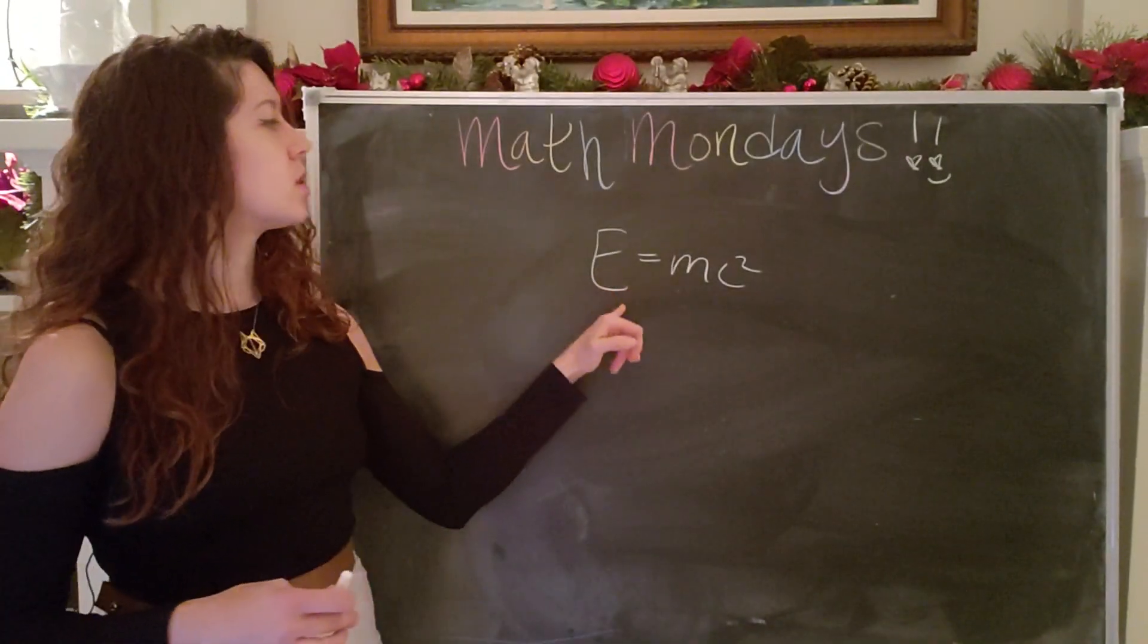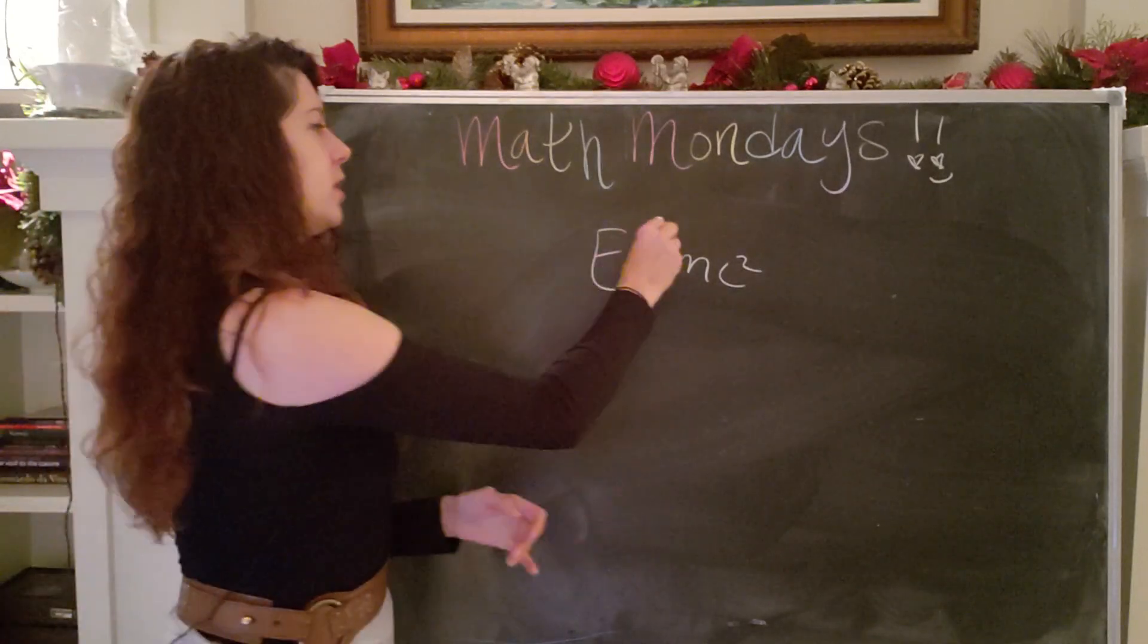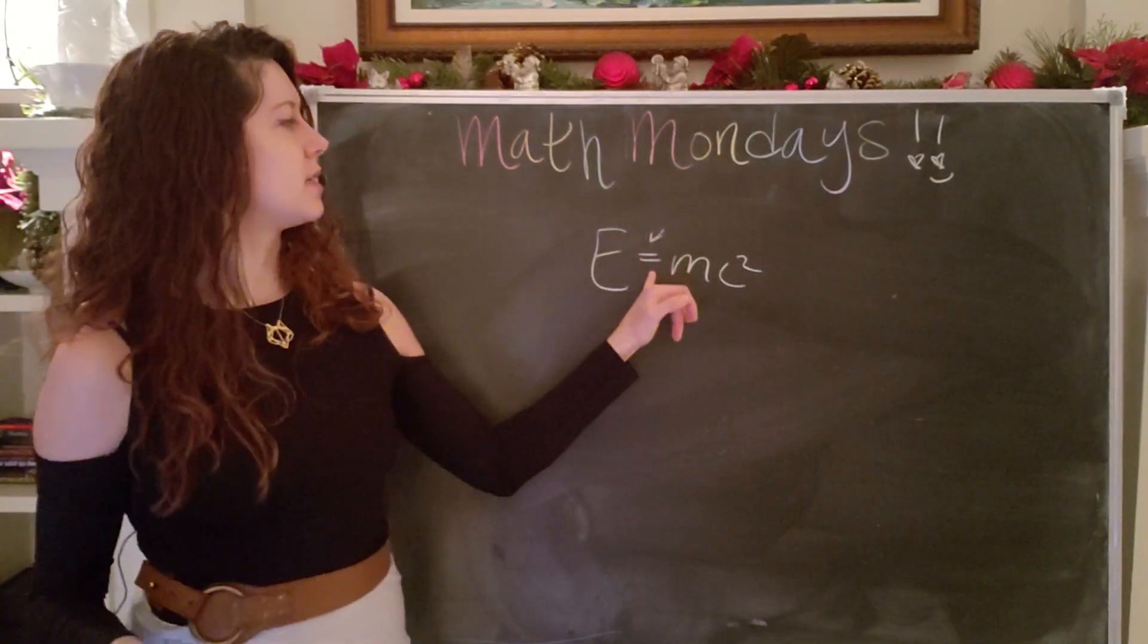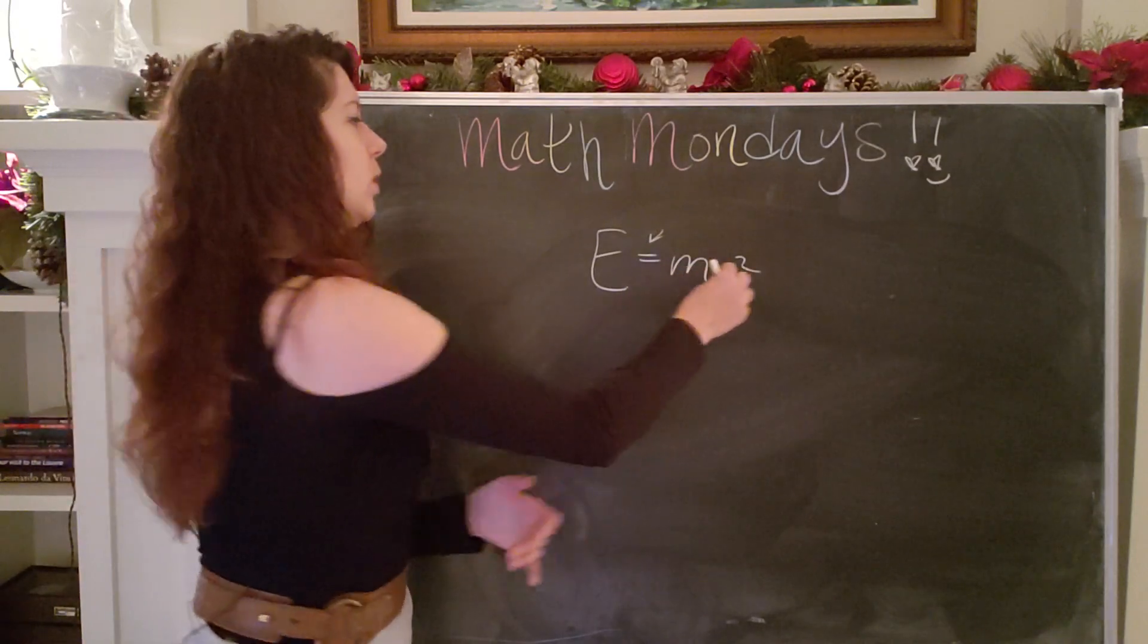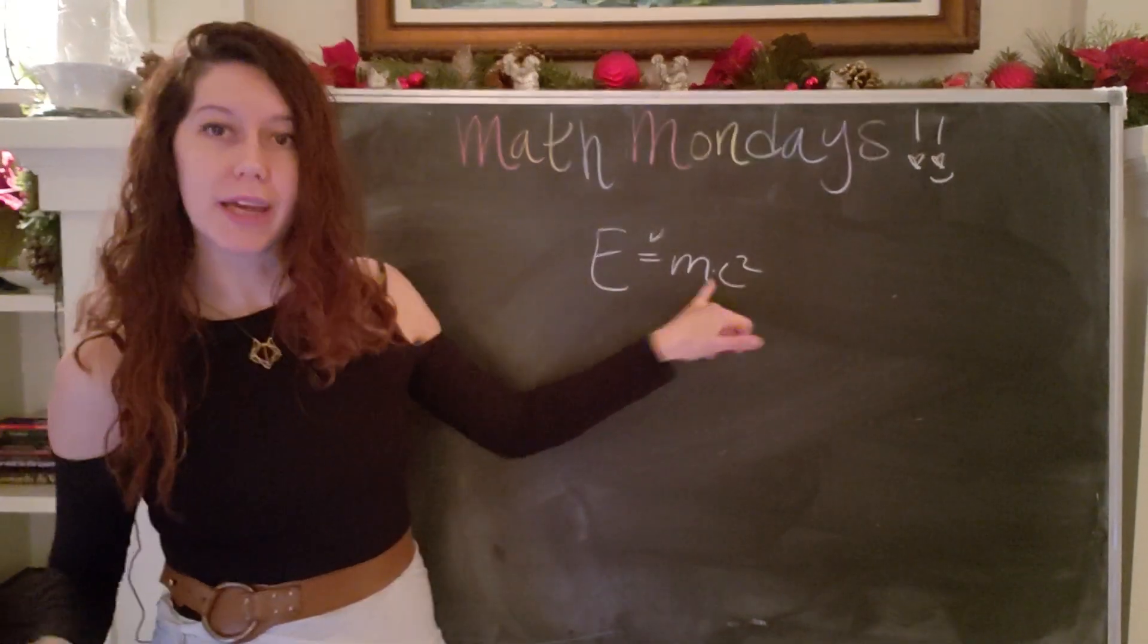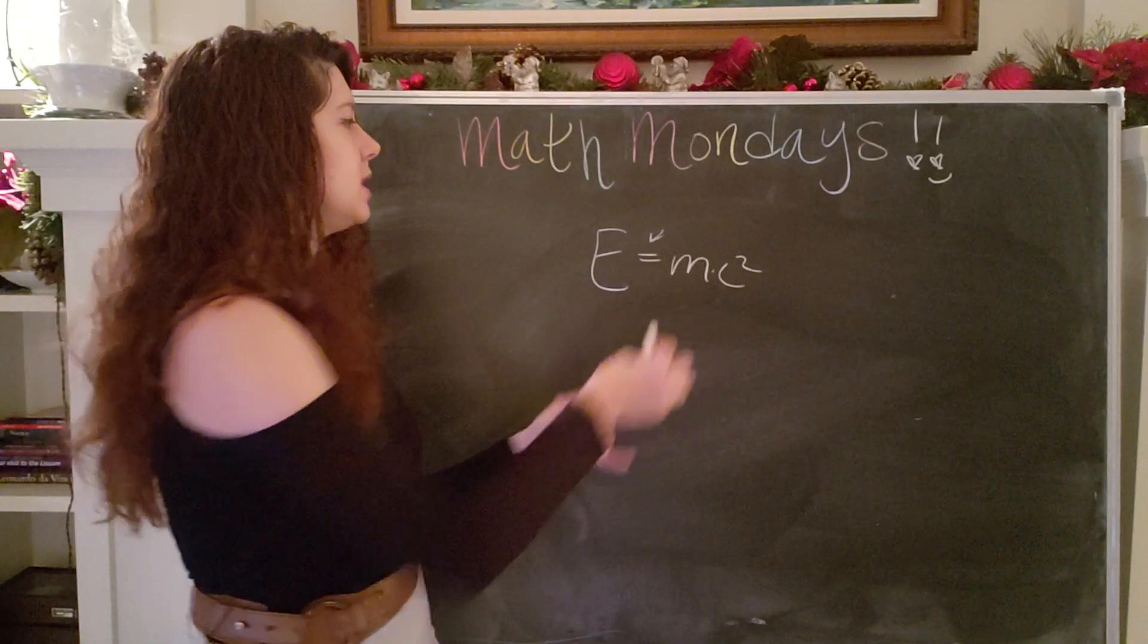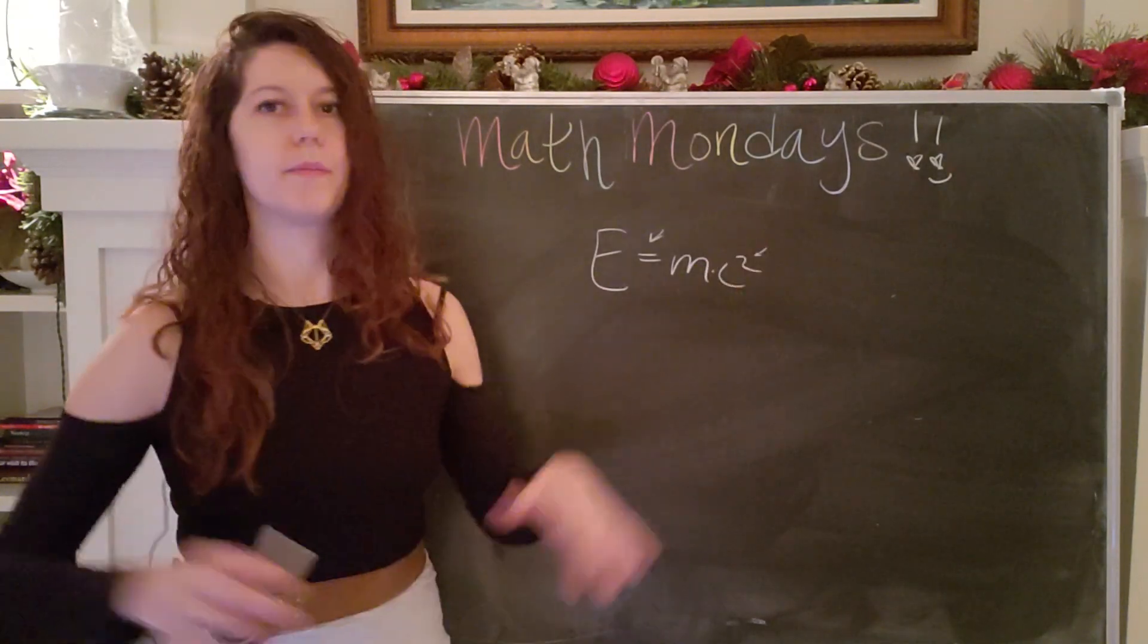So in addition to understanding that, okay, we know what this equals sign is. We know that, well, hopefully we know that there's an implied multiplication symbol between the M and the C and we know that this is an exponent. Okay.